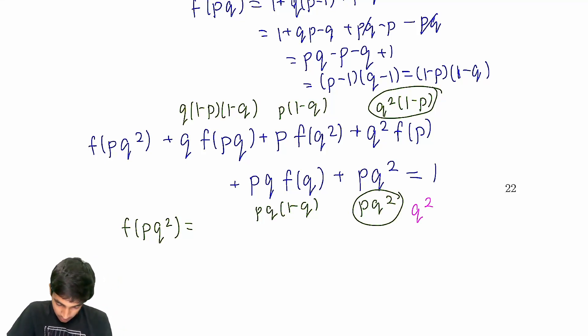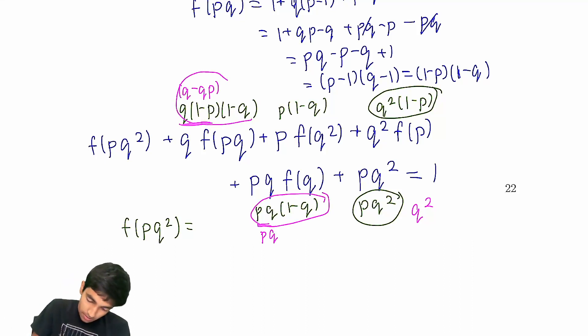What else? Is there any other nice simplifications here? Hmm. Aha. Same thing over here. We have q(1-p)(1-q), and pq(1-q). So, that's q minus qp. So, let's just write q minus qp times (1-q), and this is just pq. We add them up, we get q(1-q). So, if we add up these two quantities, we get q(1-q).